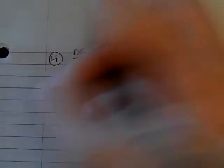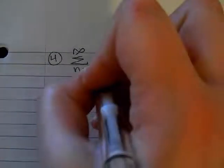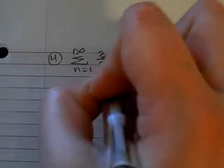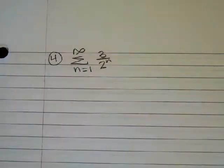Okay, N equals one to infinity of three over two to the N.